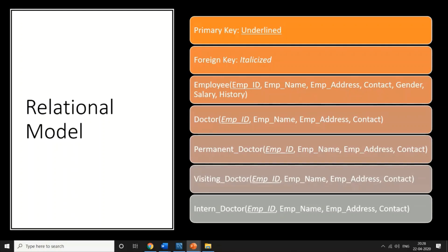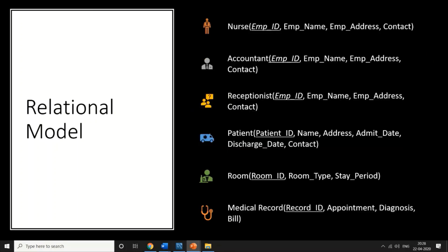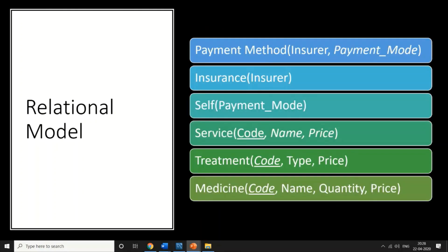Here you can see we have created a relational model with all attributes, and we have identified the primary keys and foreign keys. Primary keys are underlined and foreign keys are in italics. The various attributes include employee, doctor, permanent doctor, visiting doctor, intern doctor, nurse, accountant, receptionist, contact IDs, room, medical records, payment methods, and insurance.